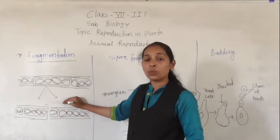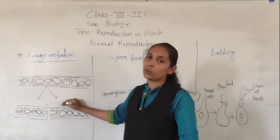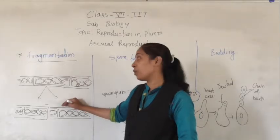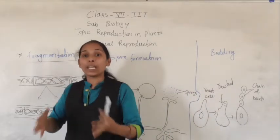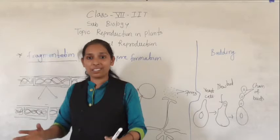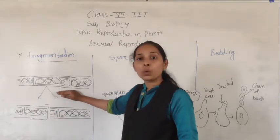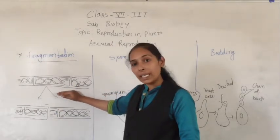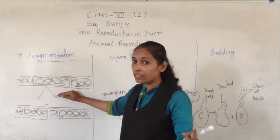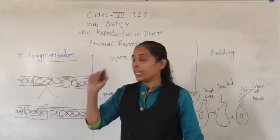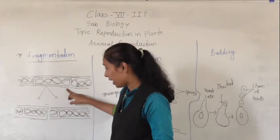The algae breaks into so many parts, and then each part starts to grow as a separate individual. Fragmentation means breaking down — the body of the algae gets broken mechanically into so many pieces. Each piece then grows into a new organism. For example, one algae can break into two parts, giving us two different algae.